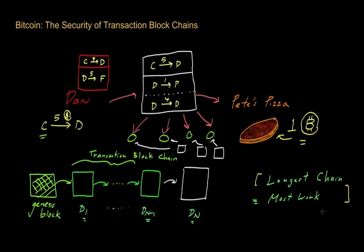For Dan to be able to pull this off, he has to start off with the transaction blockchain that existed previously and try to add a different transaction to it — rather than the previous transaction where he gave money to Pete, he's going to try to create a new block containing this fraudulent transaction between Dan and his friend Fred.